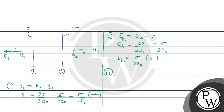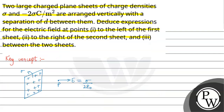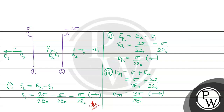The third part: between the two sheets. For a point between the sheets, E1 and E2 are in the same direction. E1 is sigma by 2 epsilon naught and E2 is 2 sigma by 2 epsilon naught. So E1 plus E2 gives 3 sigma by 2 epsilon naught. The final answer for the first part is sigma by 2 epsilon naught, the second part is sigma by 2 epsilon naught, and the third part is 3 sigma by 2 epsilon naught.